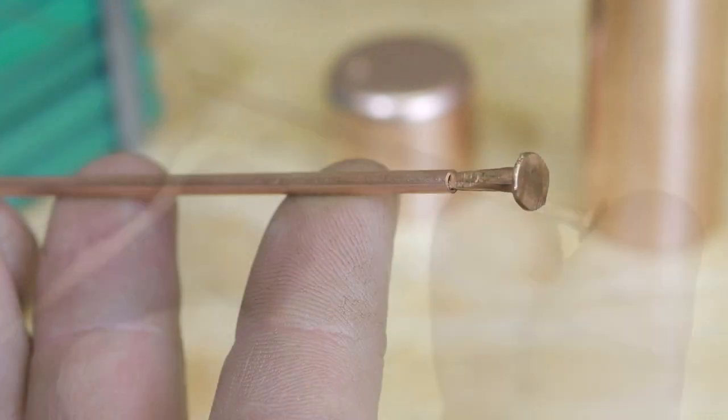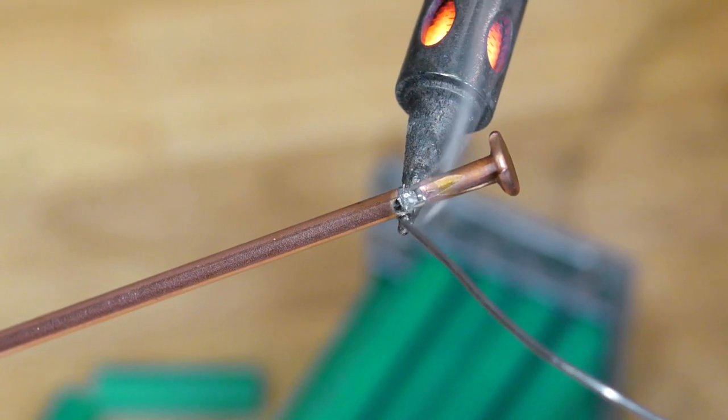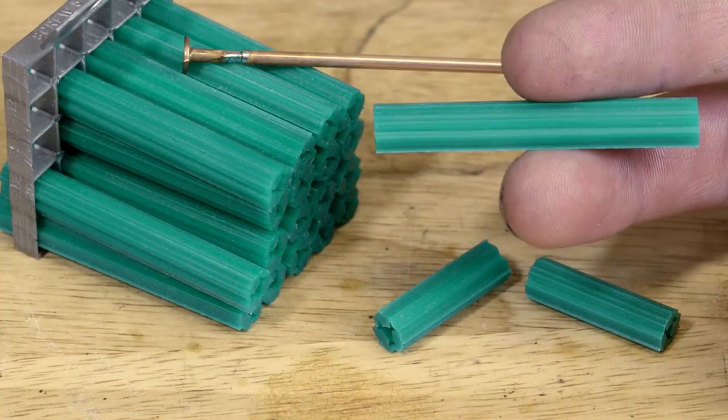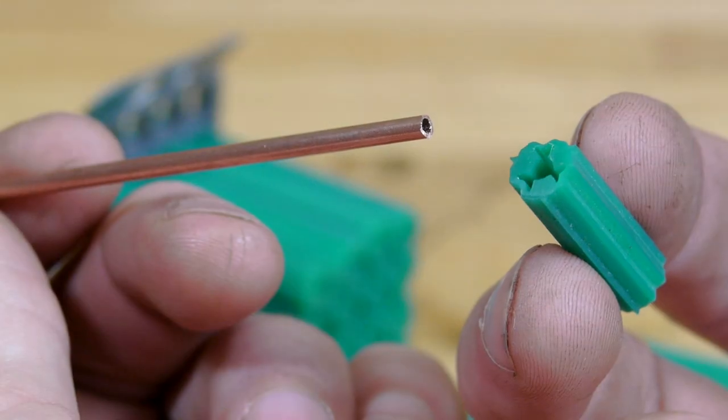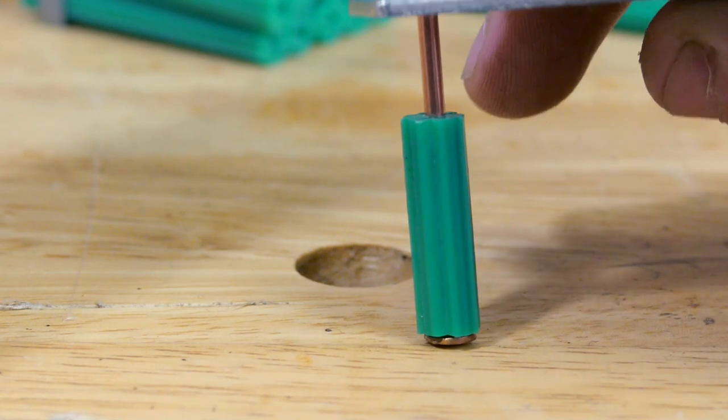The first step will be to solder this tack in place. This will be the center core of the glow plug. To insulate it from the rest of the cartridge, one of these plastic screw anchors is cut in half and slid down from the other end of the tube to act as a sheath over the tack.